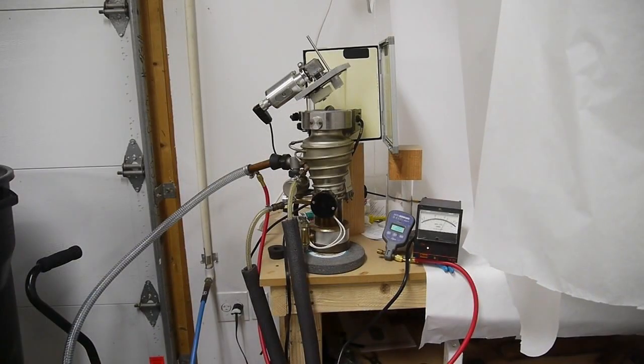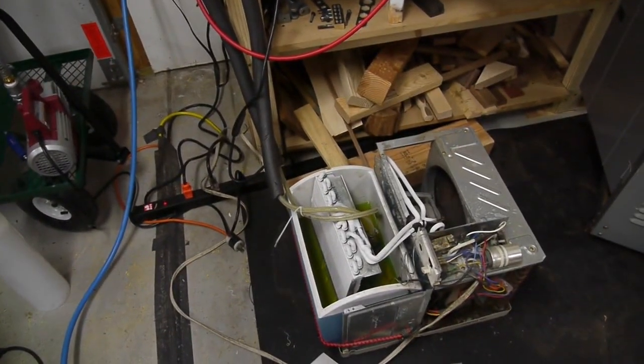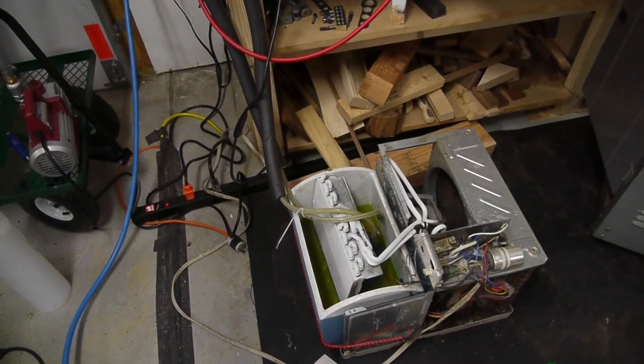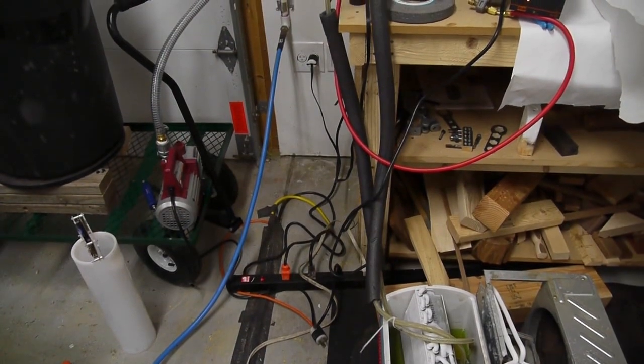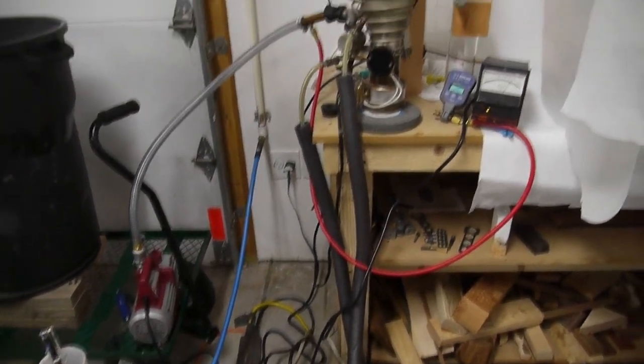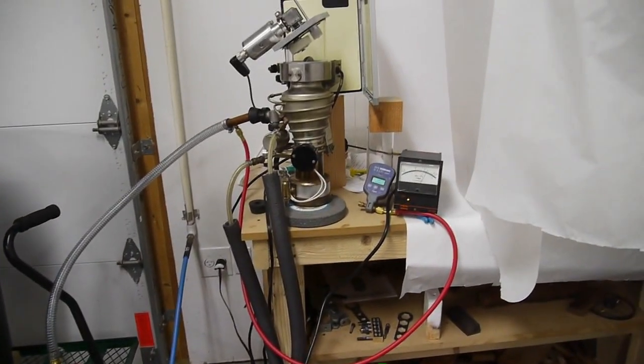This is the new diffusion pump that I got at Halted, and it's water-cooled, so I've got my air conditioner water chiller running and it's pumping water through the pump. I've got the Harbor Freight vacuum pump, a two-stage rotary pump, and that's pumping the chamber down.